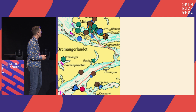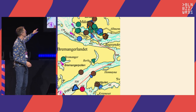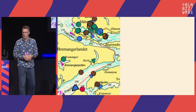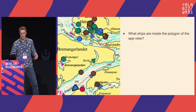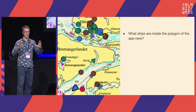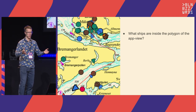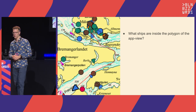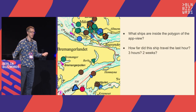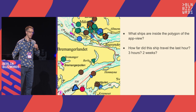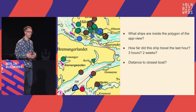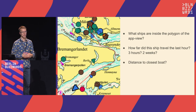Going back to the application, I can select a ship and see the red line showing where the ship has been traveling for the past hours. Postgres can help me extract the ships in view — I can say, I'm looking at these map coordinates, can you tell me what ships are contained by this envelope? I can even ask Postgres how far did this ship travel the last hour, or three hours, or two weeks? And even the distance to the closest boats. These things are straightforward with Postgres.